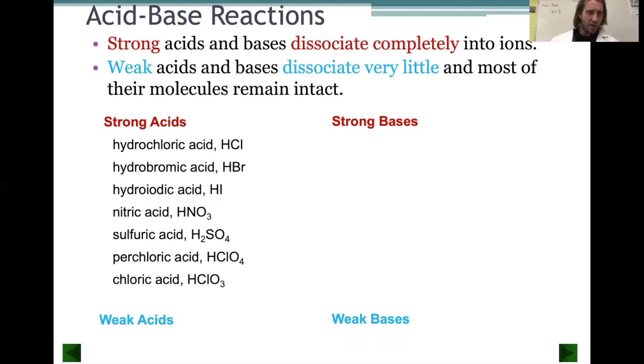There are seven strong acids that we need to be familiar with. We've got the halide acids, including hydrochloric, hydrobromic, hydroiodic. Those are all strong. We've got our oxoacids that are strong acids: nitric, sulfuric, perchloric, and chloric acids. These are the big seven to be on the lookout for.